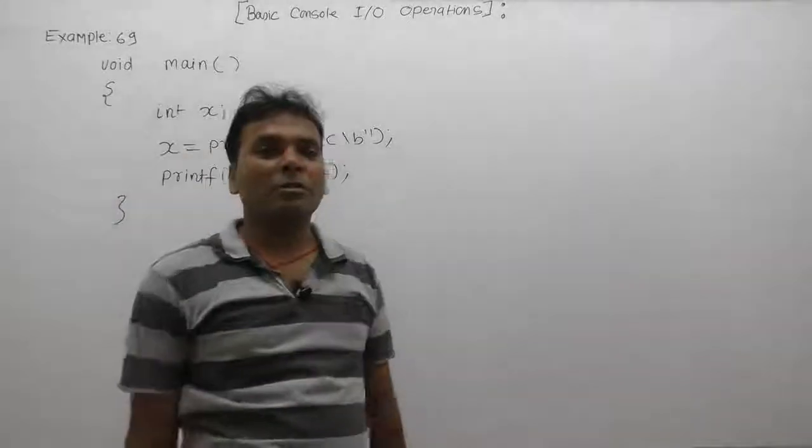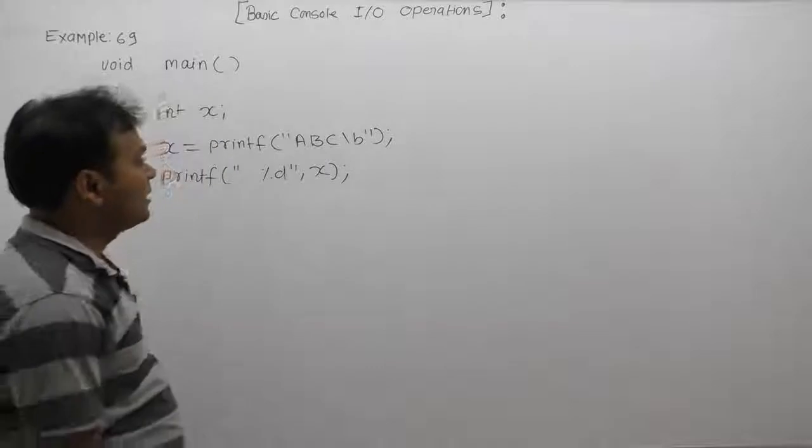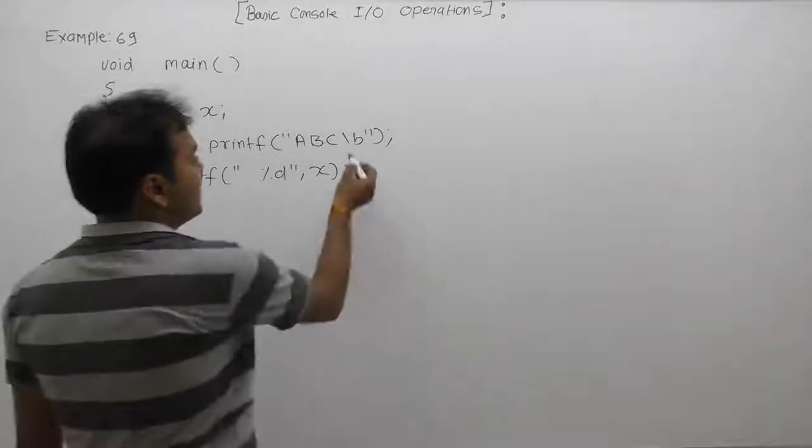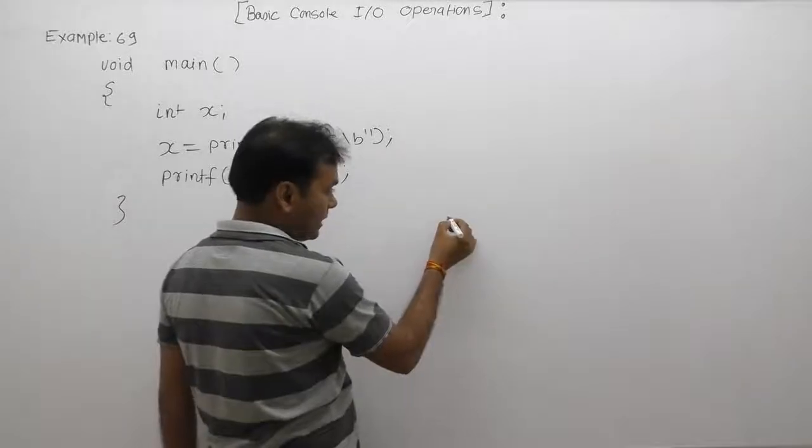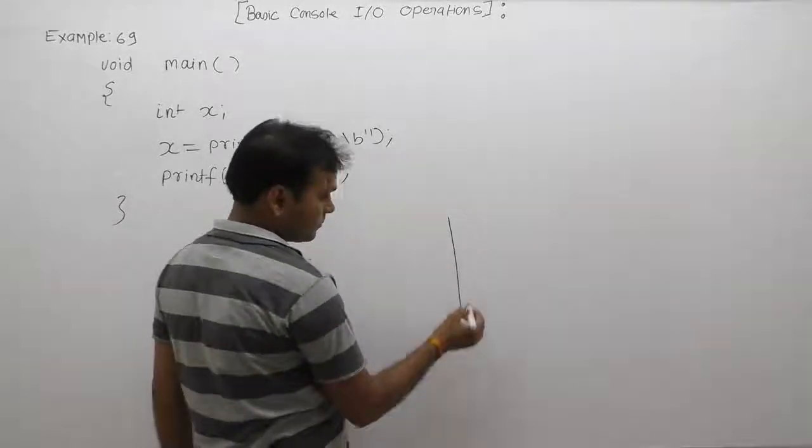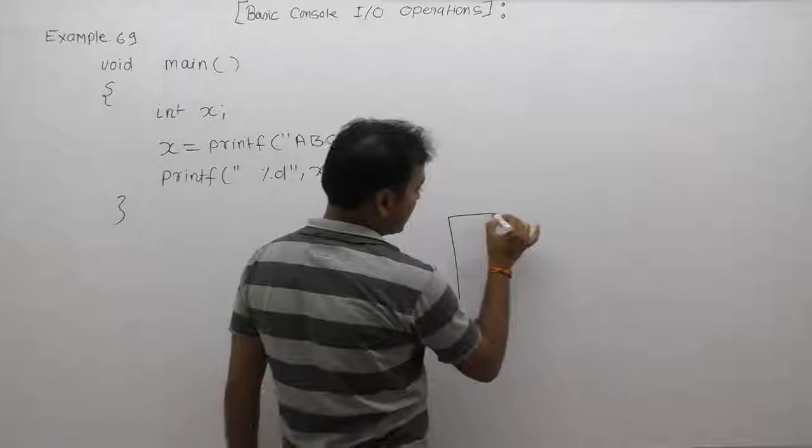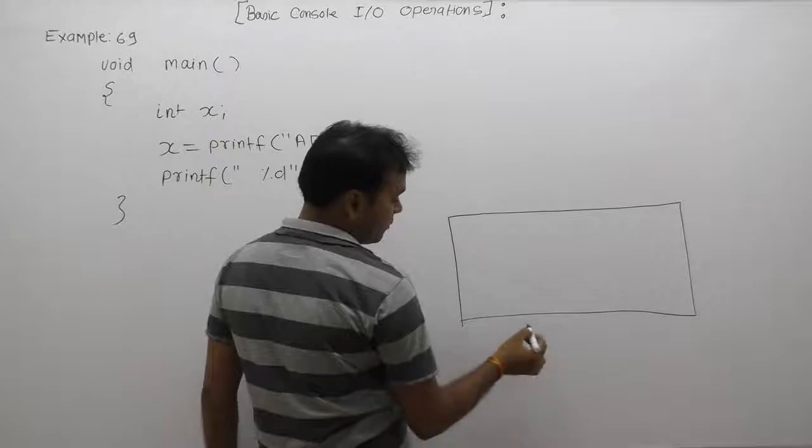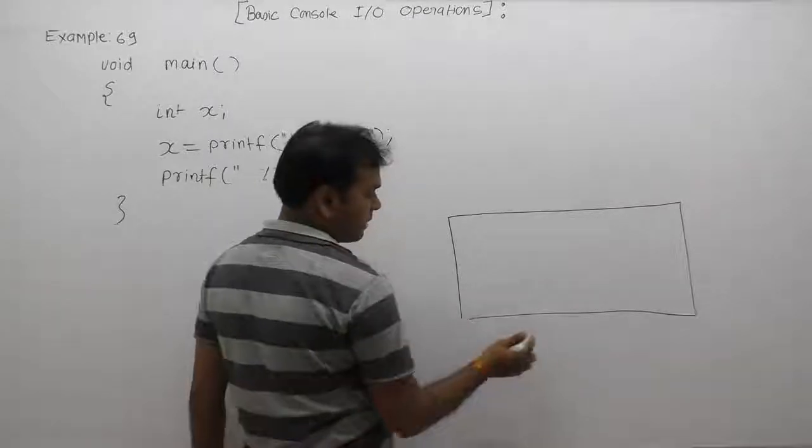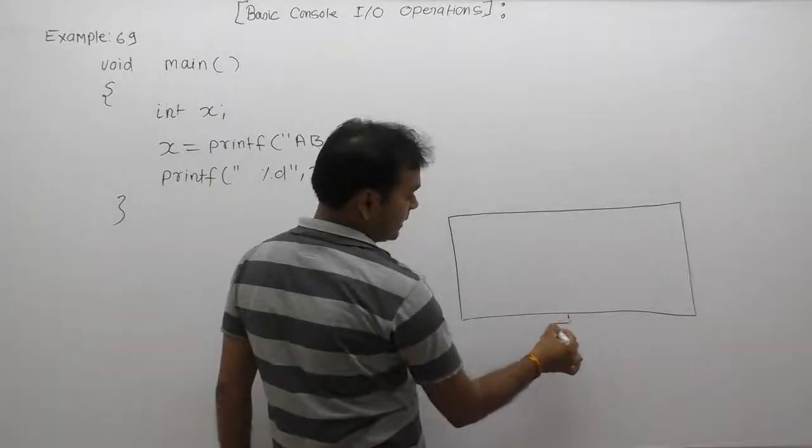Next, what is the output of the given printf function regarding escape sequence characters? As you know, the printf function will return the number of supplied characters in the form of a format string or inside the format string. It will count both types of characters: printable characters as well as non-printable characters.